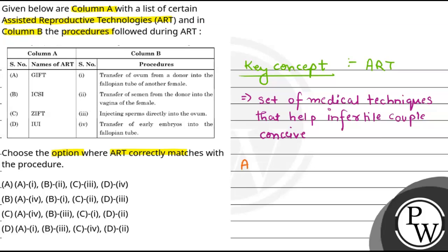First, if we talk about the first option, that is GIFT. In GIFT, there is transfer of ovum from donor into the fallopian tube of another female. As the name suggests, gamete intrafallopian transfer occurs. We can say this is an in vivo fertilization method. In this case, fusion of gametes occurs within the female.